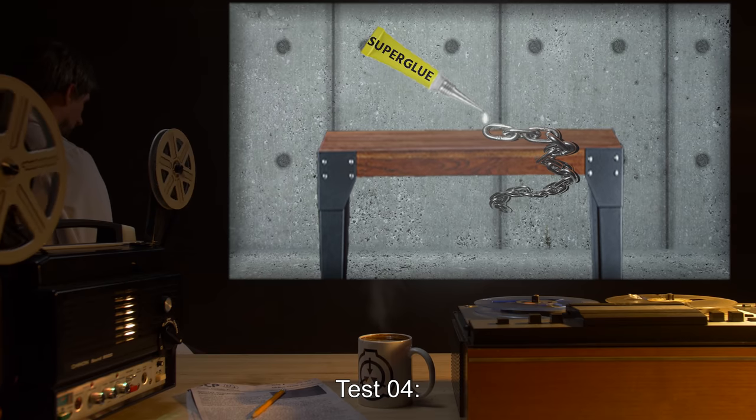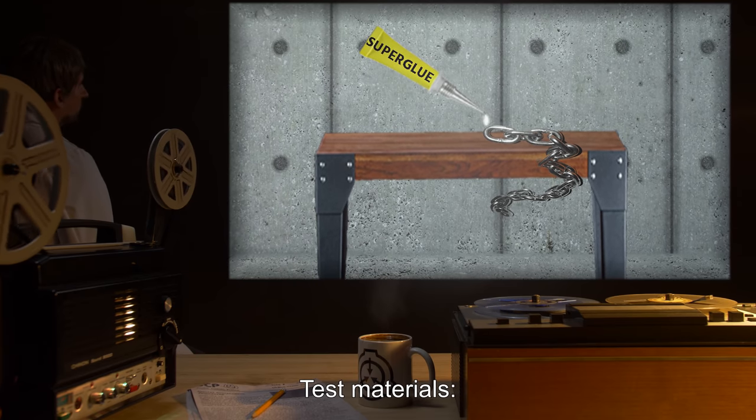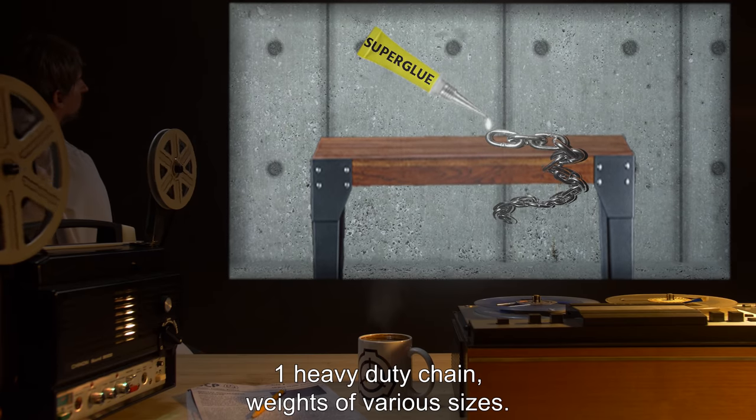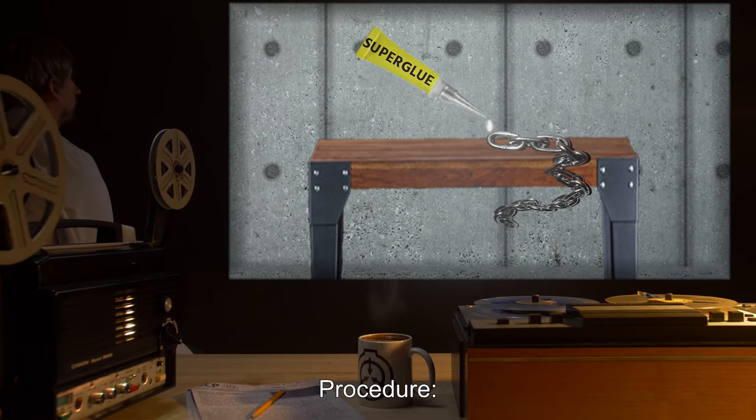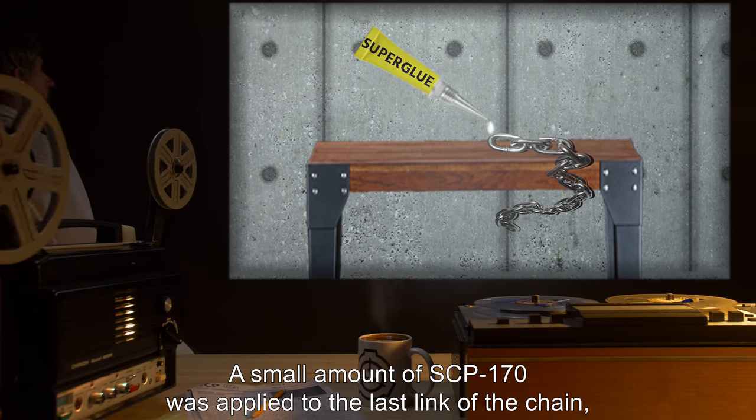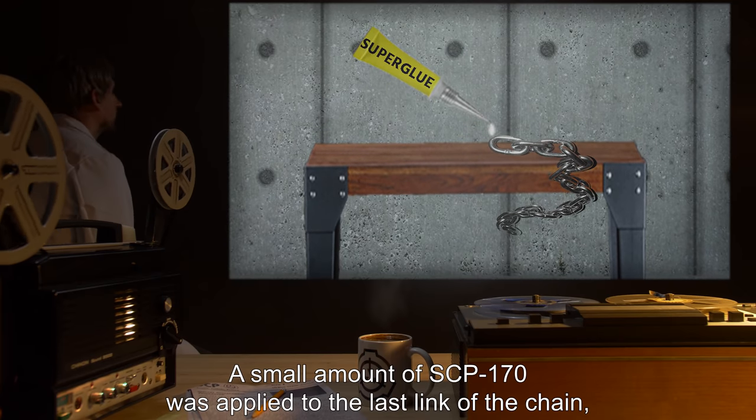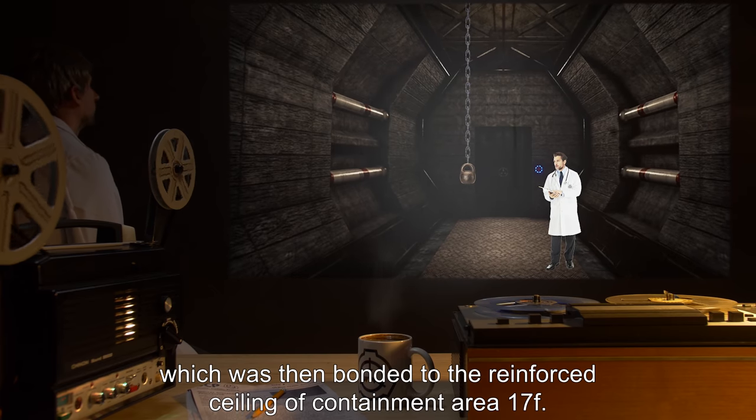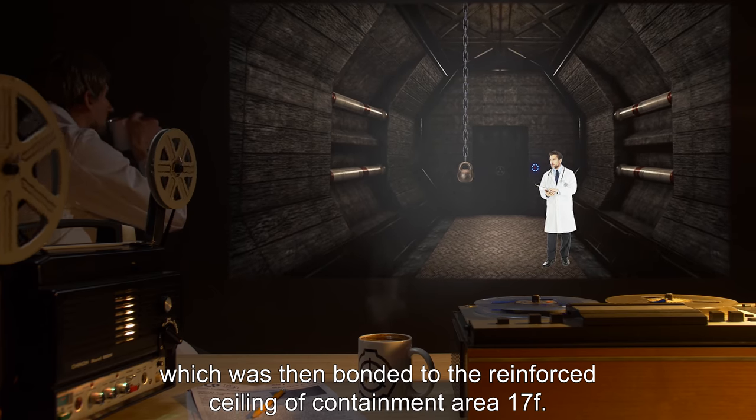Notable tests. Test 04. Test materials: one heavy duty chain, weights of various sizes. Procedure: a small amount of SCP-170 was applied to the last link of the chain, which was then bonded to the reinforced ceiling of containment area 17F. Weights of various sizes were then hung on the chain to determine the structural failing point of the bond.